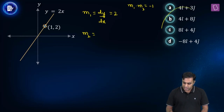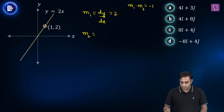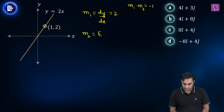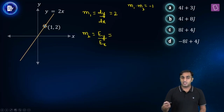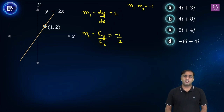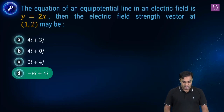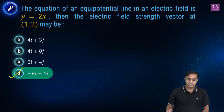In other words, looking at the given options for the electric field strength vector, the slope of the tangent drawn to the field line is simply the ratio of the y-component to the x-component of the electric field, and that ratio should be minus one half. The option that satisfies this is option D, so the correct answer is D.